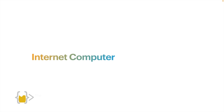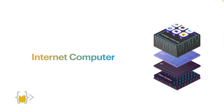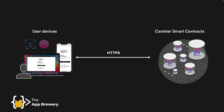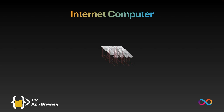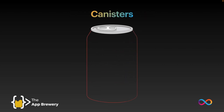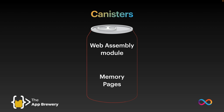Basically, the internet computer aggregates the compute capacity of a large number of independent data centers around the world, combining them using the internet computer protocol into a large, single decentralized world computer. This decentralized computer is organized into individual units called canisters or canister smart chains, which can run processes, execute code, and store data. As a user, you can tap into canisters directly by making HTTPS requests. As a developer, the internet computer is essentially a collection of canisters, each holding programs and program state through a WebAssembly module and a flat memory model called a memory page.